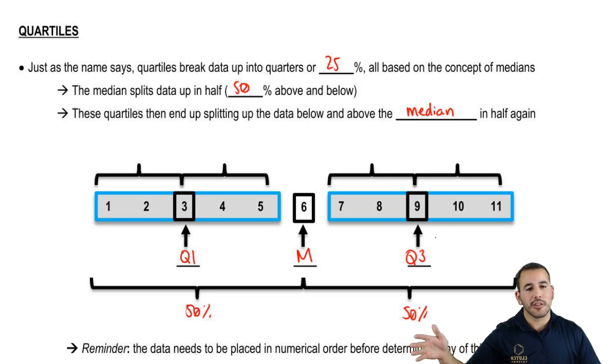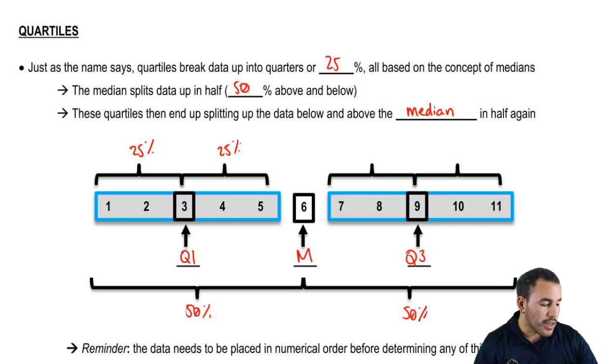From the first data point to Q1 we have 25%. From Q1 to our median we have 25% of our data. From the median to Q3 we have 25%, and from Q3 to the last data point we have 25%. So technically Q1 is like a 25th percentile, because 25% of the data lies below that.